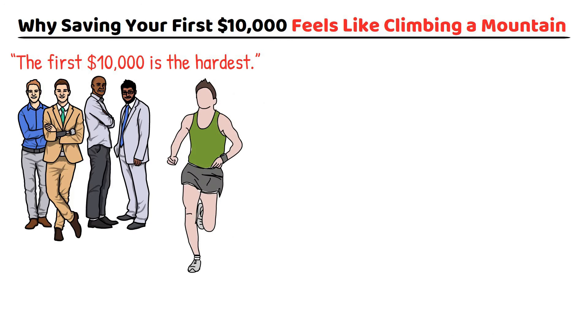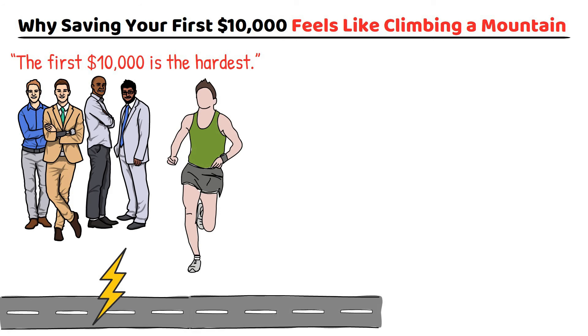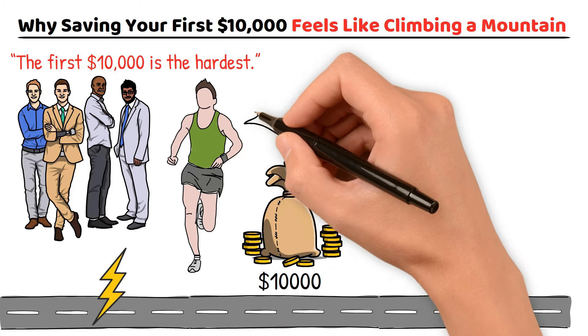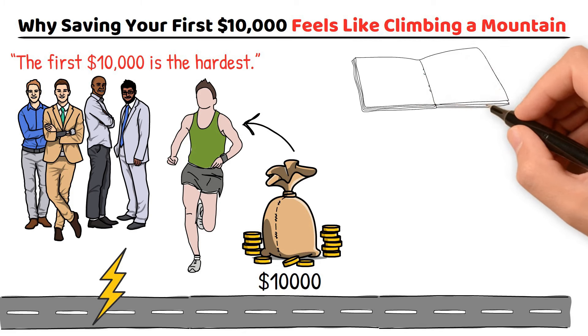Think of achieving financial independence as running a marathon. The first few kilometers are often the toughest. You're building momentum, trying to find your pace, and everything feels like it's moving slowly. The $10,000 milestone is like that moment in the race when you finally get your second wind. Things start to get easier, and the pace picks up. So, why is this the case?